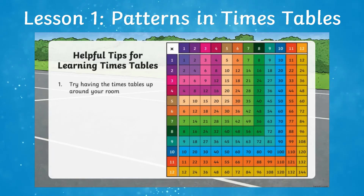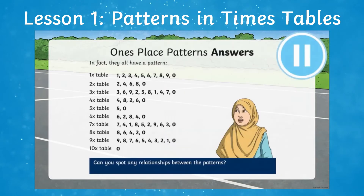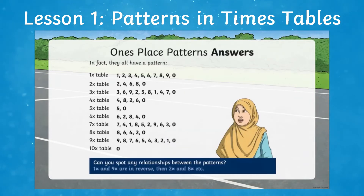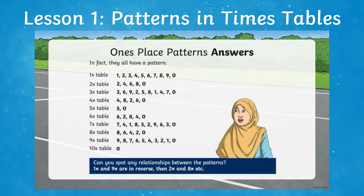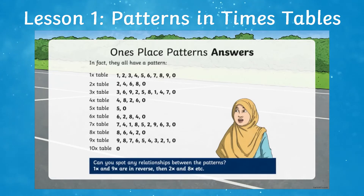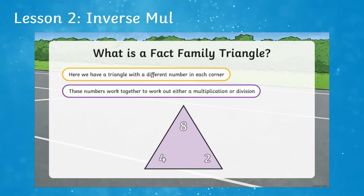The first tip is to try having your times tables up around your room, or even better, have them in multiple places — maybe where you eat your breakfast. One pattern I noticed: the ones times table goes 1, 2, 3, 4, 5, 6, 7, 8, 9, 0, and the nines times table goes 9, 8, 7, 6, 5, 4, 3, 2, 1, 0.